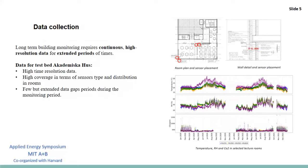Long-term building monitoring requires continuous high resolution data for extended periods of time. For this specific building the resolution of the data and coverage in terms of distribution is high. In the figure on the right hand side you can see the distribution within one of the floor plans and the construction details showing sensors embedded within the wall structure. The plot below shows hourly temperature, relative humidity and CO2 concentration during 2020 and 2021 in selected rooms. From the plots we can see that there are extended periods of time during the monitoring period where no data were recorded.